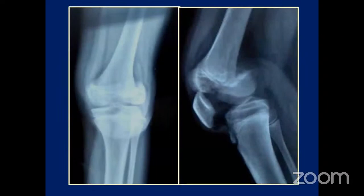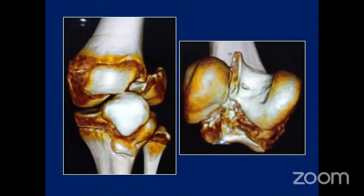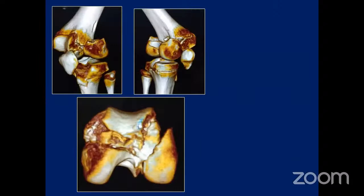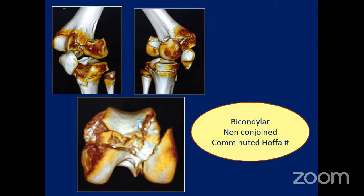With this fracture, as sir mentioned, we need a CT scan to see the intra-articular extensions. We performed the CT scan, and this was the 3D CT image. As we can see, there is bicondylar involvement, and on having a closer look at the axial cuts, we saw that it was a non-conjoined type of bicondylar Hoffa fracture. Both condyles have no communicating bone between them. This was the diagnosis: a bicondylar non-conjoined comminuted Hoffa fracture.